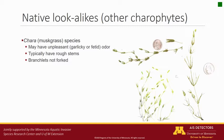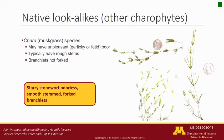You are most likely to confuse starry stonewort with other native carophytes, which are important components of Minnesota's aquatic plant communities. Chara, or muskgrass species, can have an unpleasant odor, often described as being fetid or musky, hence muskgrass. But these species typically have rough stems, and their branchlets are shorter and not forked. Starry stonewort has smooth stems and predominantly forked branchlets.